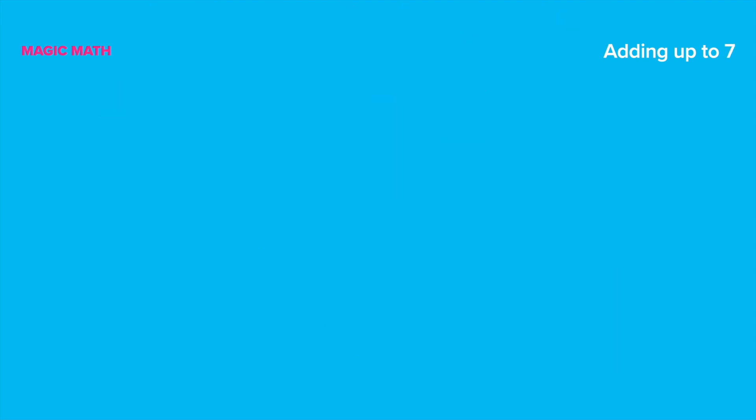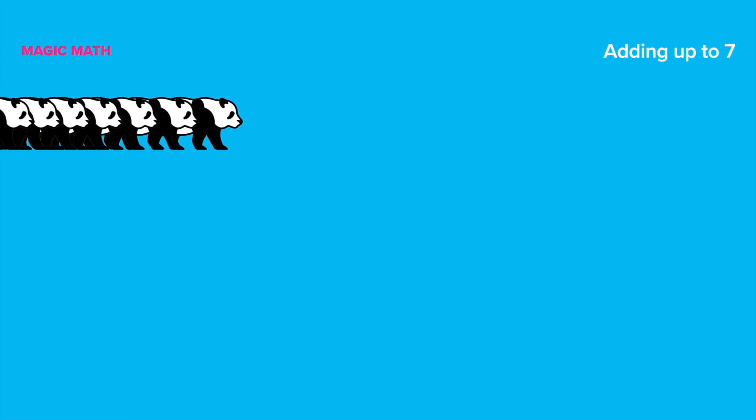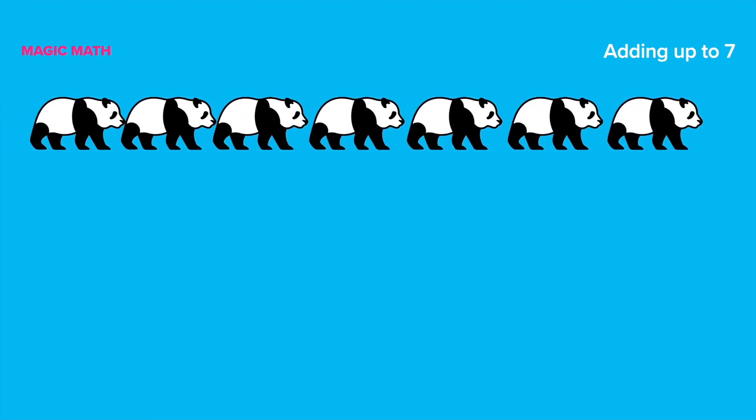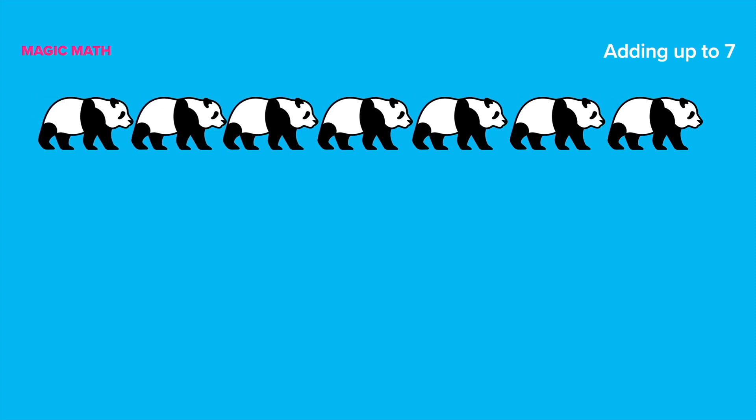Now, let's take the challenge up a level. Let's do some addition exercises with the giant panda family. How many pandas do you see in total? Let's count. 1, 2, 3, 4, 5, 6, and 7. Great! We see 7 pandas in total.